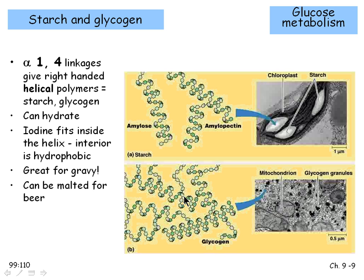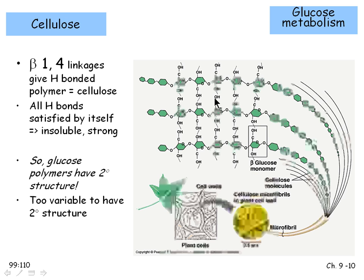Glycogen is very similar to starch at the molecular level — sometimes called animal starch — with alpha-1,4 linkages but much more highly branched than plant starch. In cellulose, the beta-1,4 linkages orient the potential hydrogen bonding so that all hydrogen bonds are satisfied by other cellulose molecules, making cellulose insoluble and strong. Glucose polymers actually have secondary structure — either helical like starch/glycogen or sheet-like like cellulose — analogous to alpha helices and beta sheets in proteins. However, they don't have tertiary structure.